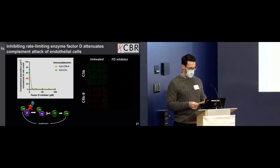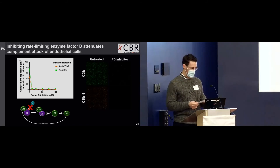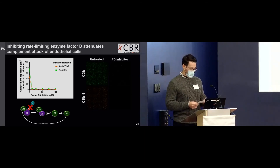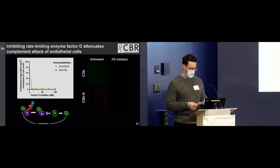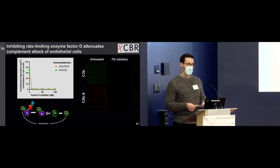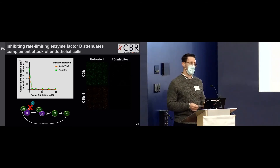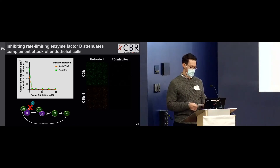These data share parallels with our ELISA data. First, it was the split products of the alternative pathway, Ba and Bb, that were significantly correlated with the severity of hypoxemia in COVID-19. Second, it was elevated Ba and factor D that conveyed an increased odds of death. Why this is the case is not yet clear, but it may relate to the reliance of both the lectin and classical pathways on the alternative pathway to amplify complement activation, funneling toward factor D-dependent generation of massive amounts of C3 and downstream C5B9.